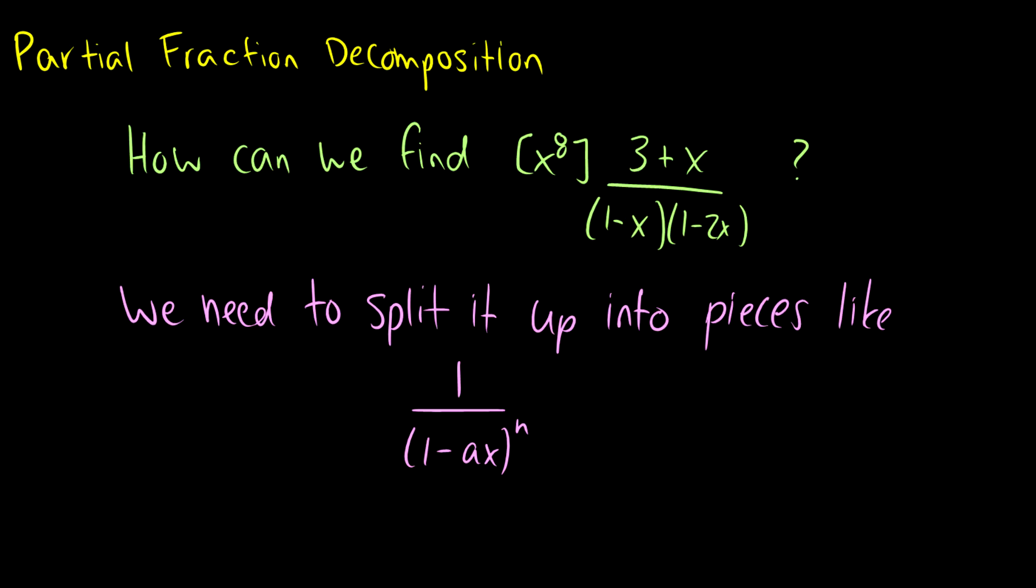So here's the question: how can we find the coefficient of x to the 8 of 3 plus x over 1 minus x times 1 minus 2x? Well clearly we see two different generating functions there, but we also have this variable on top, 3 plus x, that's a little bit harder to deal with.